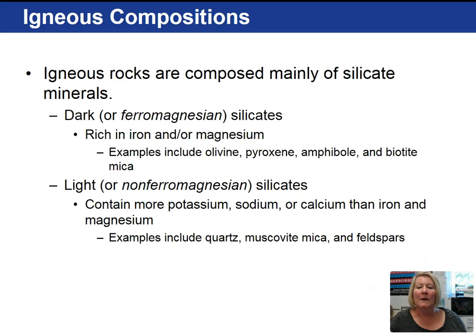On the other hand, our light or non-ferromagnesian silicates contain potassium, sodium, and calcium, rather than iron and magnesium. Examples of common light silicates include quartz, muscovite mica, orthoclase feldspars, and plagioclase feldspars.